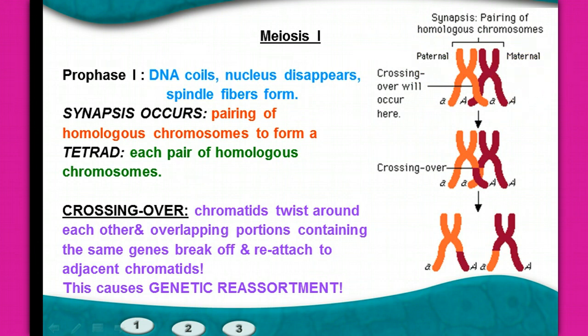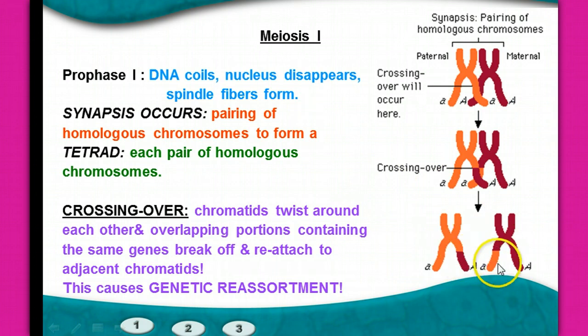When you were made, you had mom's chromosomes and dad's chromosomes come together. The sperm fertilized the egg and became a zygote — that's what you are. You have some of mom's genes and some of dad's genes; you don't look exactly like either parent because you're a combination of both. Sometimes there are new combinations of genes because of this process called crossing over.